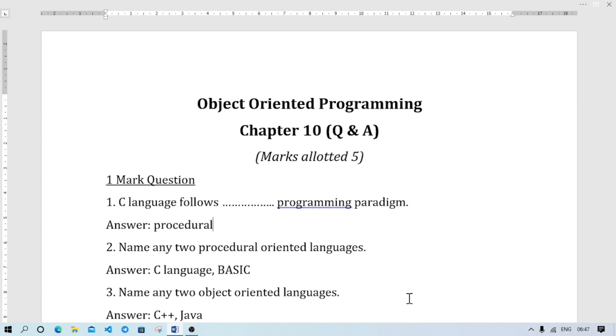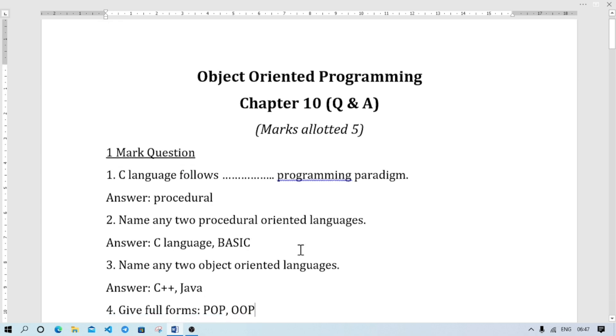First, C follows procedural programming paradigm. C uses procedural, and object-oriented is used by C++, Java, Python, etc. Name two procedural oriented programming languages: C, BASIC, FORTRAN, COBOL. And object-oriented: C++, Java, etc.